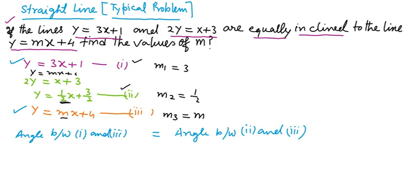Here you have 3 equations. The first one is y equals 3x plus 1, the second one is 2y equals x plus 3. This equation may be written as y equals one-half x plus 3 by 2, and the third equation is y equals mx plus 4.